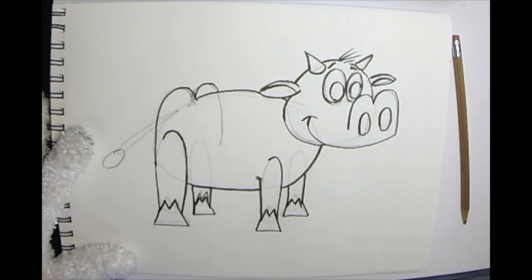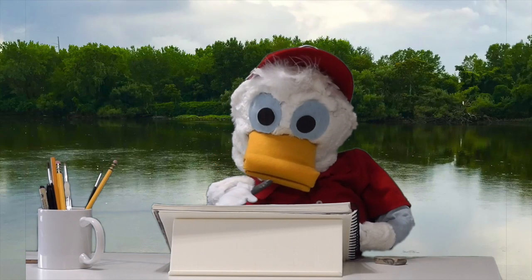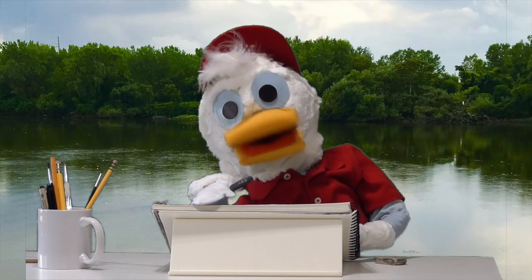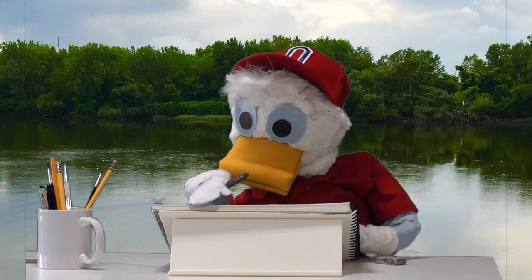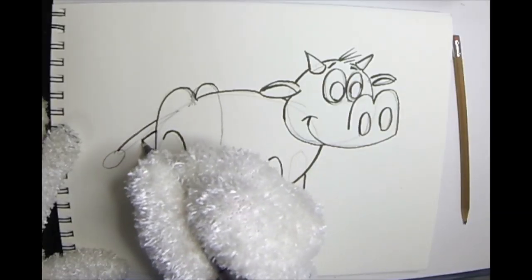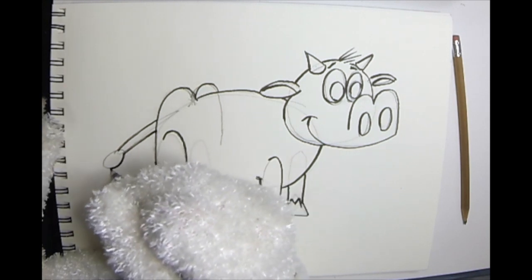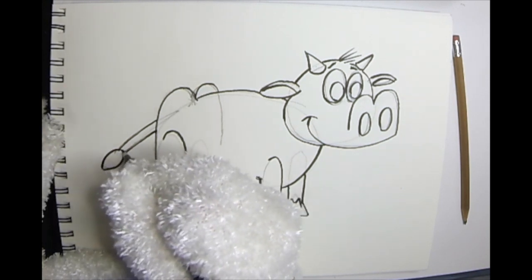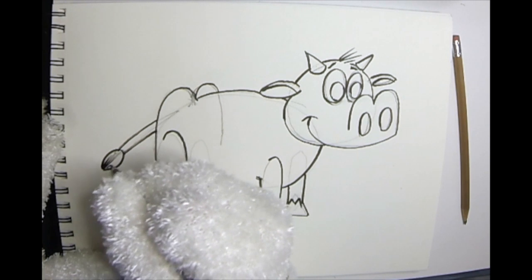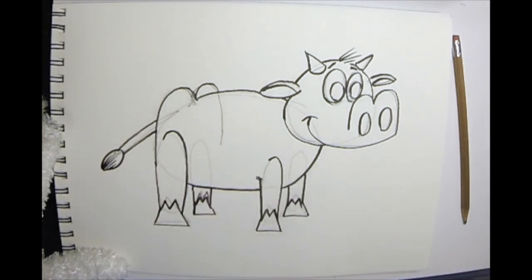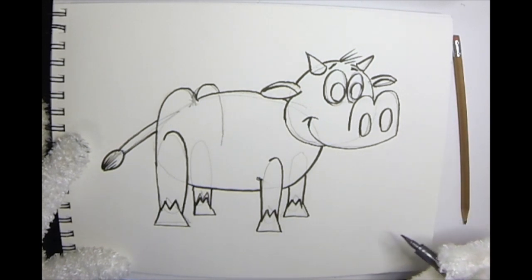And we'll erase the lines we don't need. How's yours coming along? I can't wait to see. All right. I'm almost done. I'm just going to outline the tail here. A little bushy part at the end. Here we go. I'm going to add a couple of little lines. Just like I did for the hair on the front for the hairs on the tail. And that's about it for all the main parts of my cow.